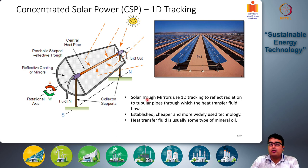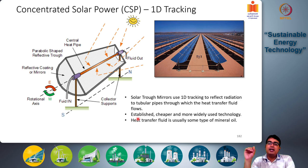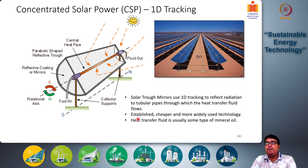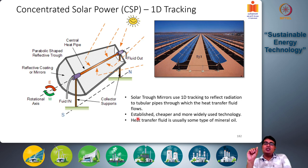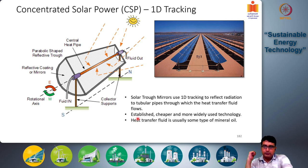These are called solar trough-type mirrors or parabolic trough mirrors. They use 1D tracking to reflect radiation onto tubular pipes through which the heat transfer fluid flows. This is an established, cheaper, and more widely used technology. The heat transfer fluid is usually a type of mineral oil with a very high boiling point, so it is essential that the fluid remains liquid throughout this zone, which also decreases pumping costs.